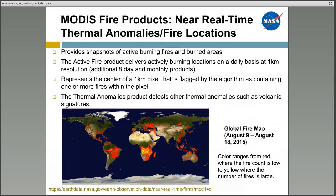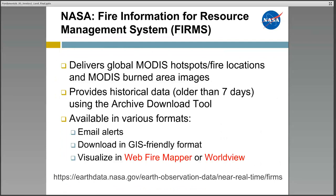The MODIS thermal anomalies and fire product provides snapshots of both active burning fires and burned areas globally. MODIS's mid-infrared band allows the instrument to identify the locations of thermal anomalies — and thus active fires. This product provides unique dimensions such as a fire mask and a fire pixel table for each fire pixel. The fire pixel table characterizes 19 attributes for fire pixels, including maximum fire radiative power. FIRMS provides near real-time active fire mapping and historical data available for download, including email alerts, direct download, or visualization in web-based tools.